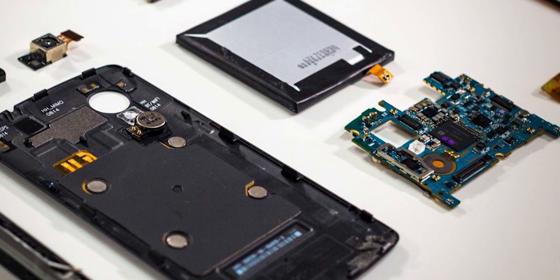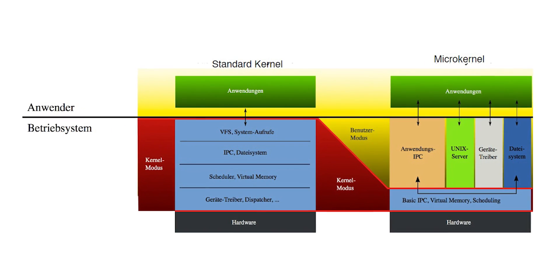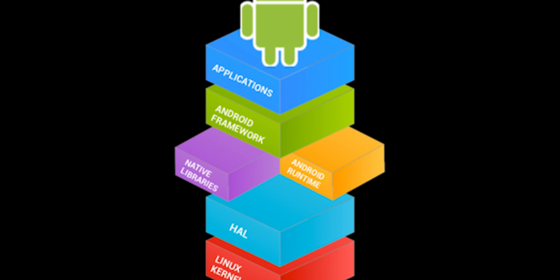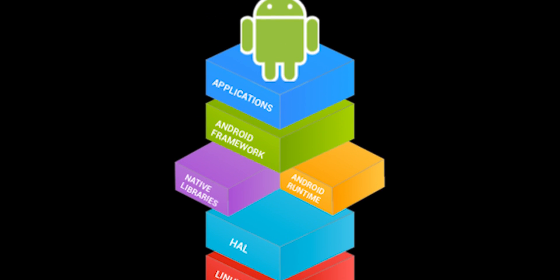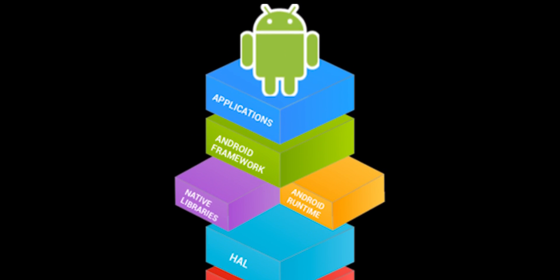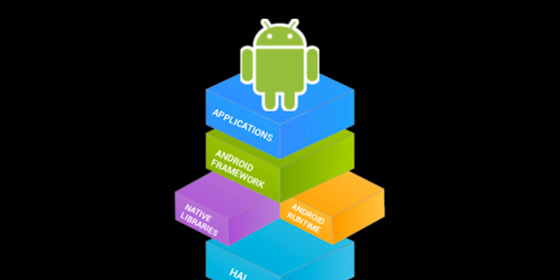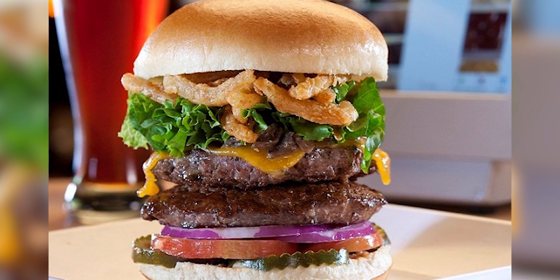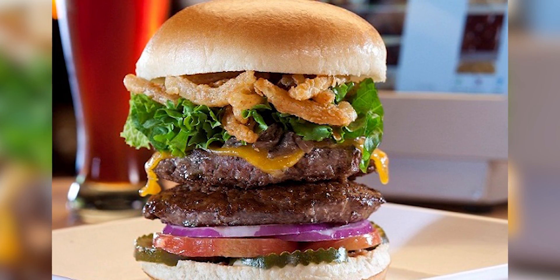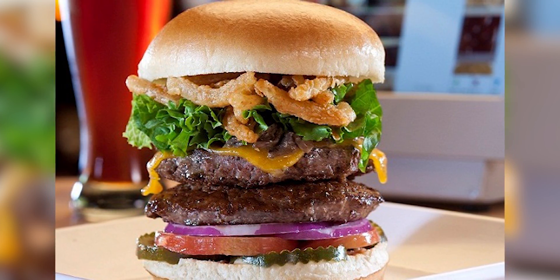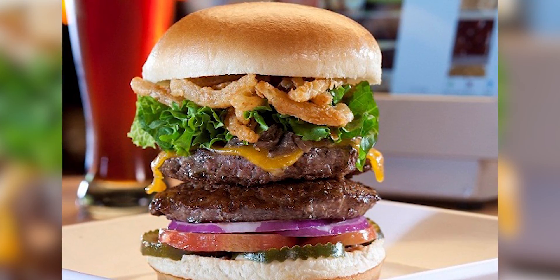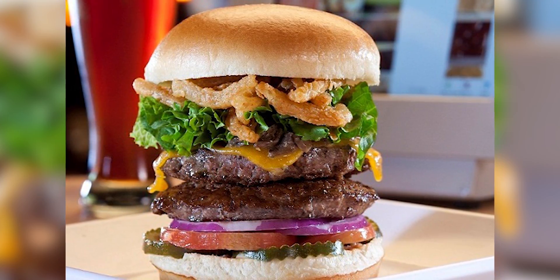For Android, we have the same hardware, a Linux monolithic kernel, a Java emulation layer, and on top of that the apps. Because of the Java emulation layer, Android is more like a jumbo burger with layers of lettuce, cheese, and tomatoes stacked in between the buns and the patty.